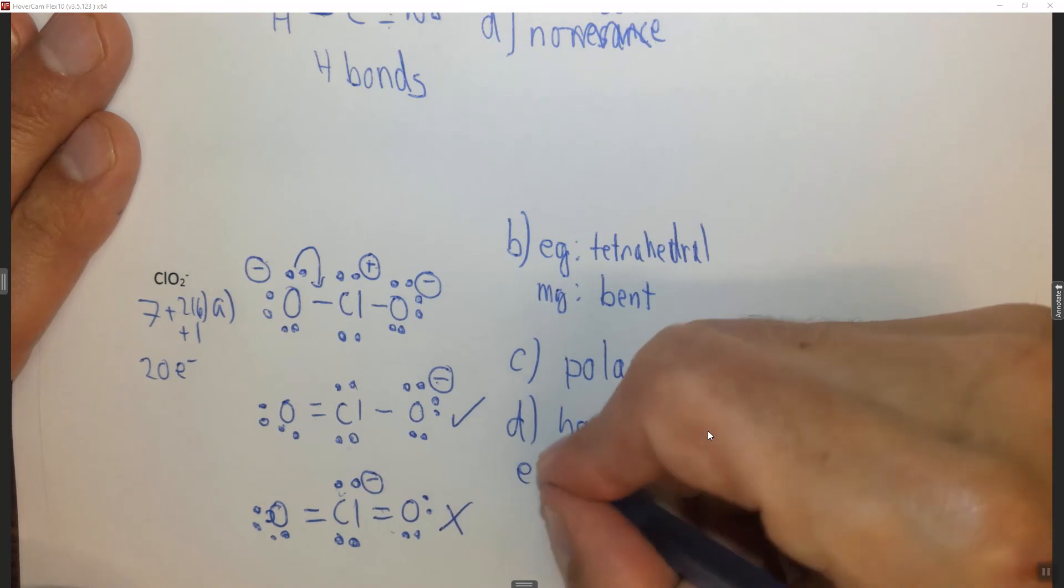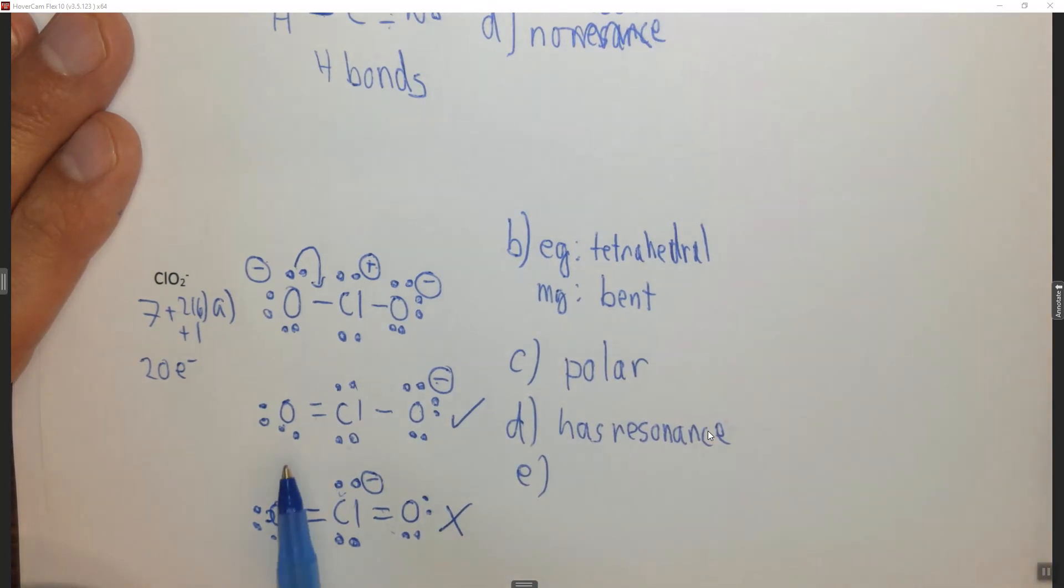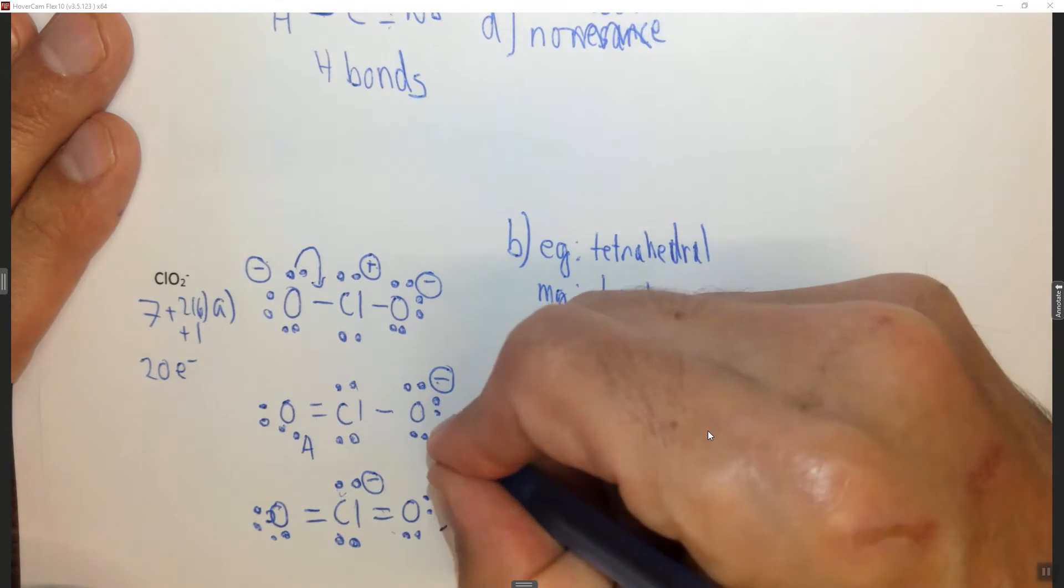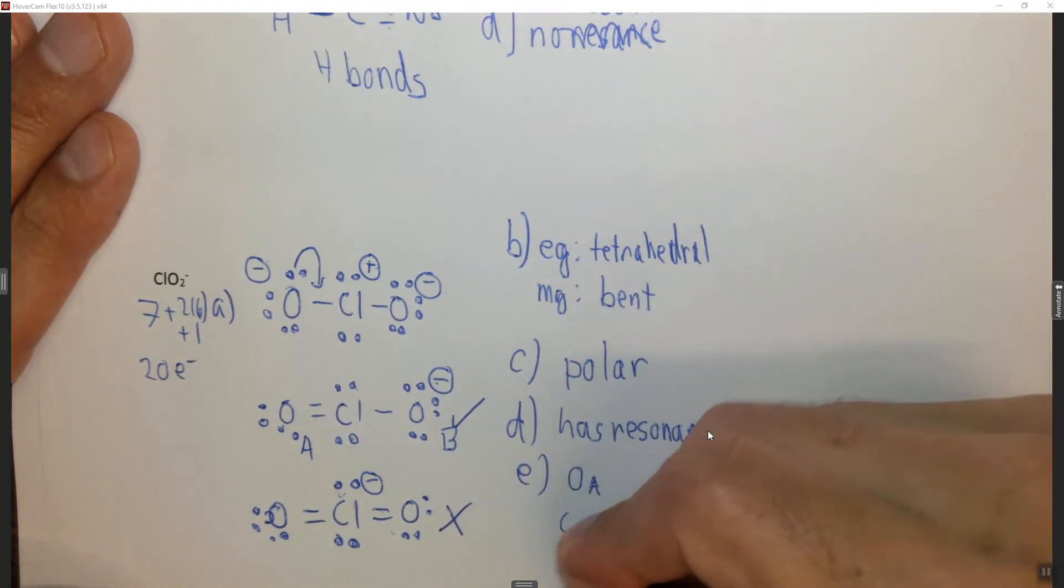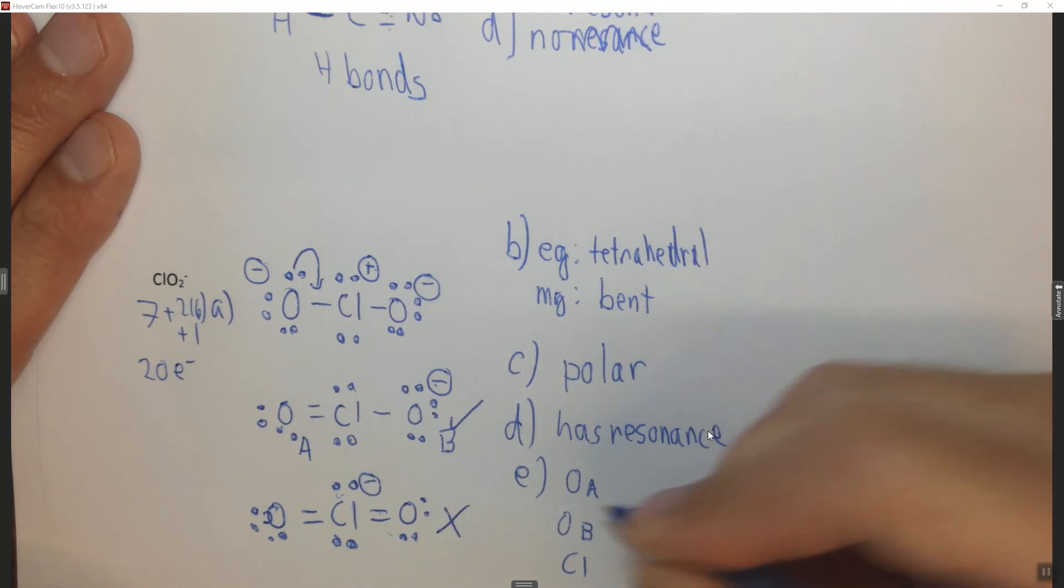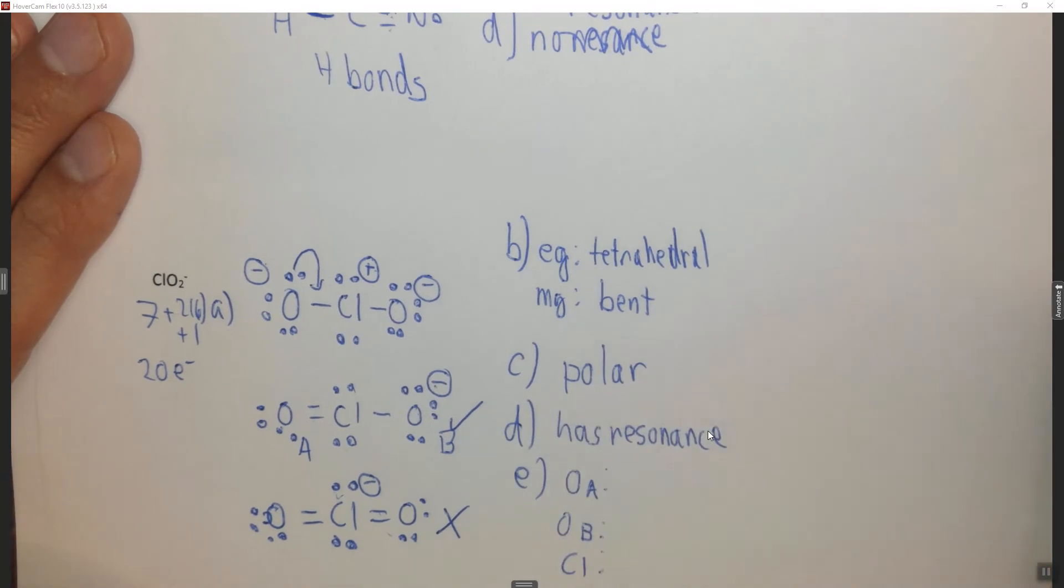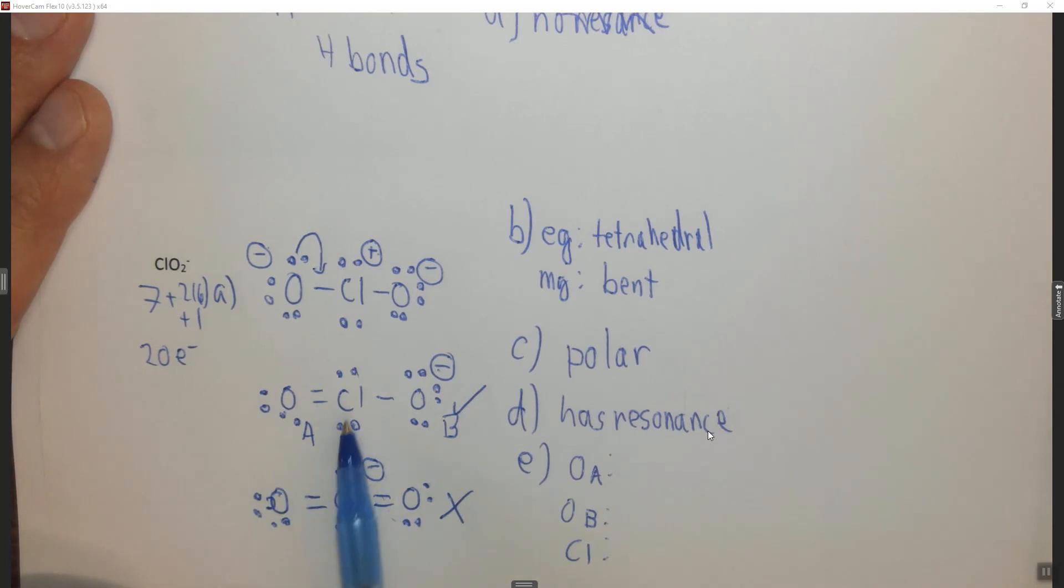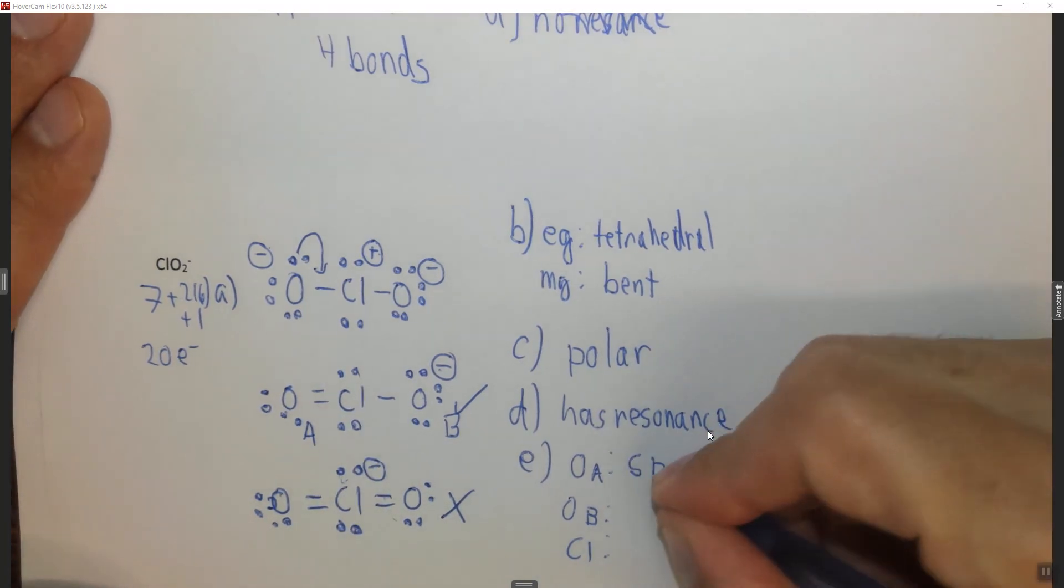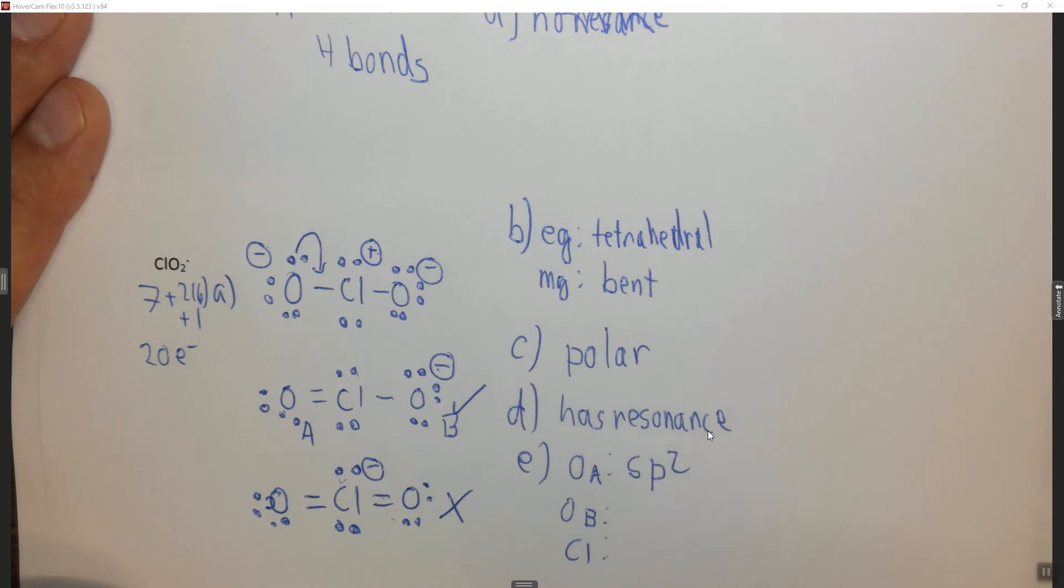E, hybridization of all unique atoms. In this case, we have this oxygen and this oxygen are different, so I have to label them. I'm going to call it A and B. So I'm going to have OA, OB, and CL. You can label it any way you wanted, but that's how I'm going to choose to label this. So in this case, oxygen A has one, two, three domains. So it's going to be SP2.